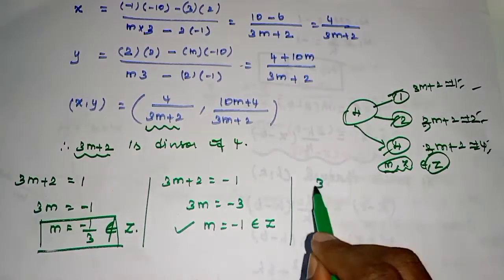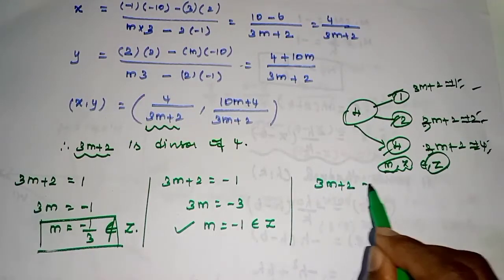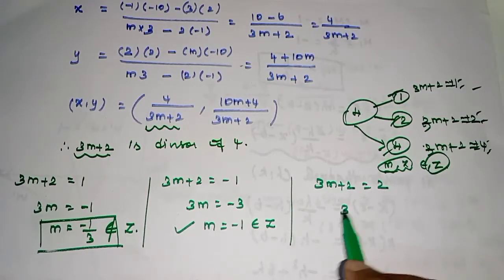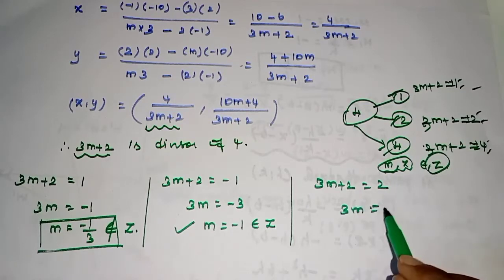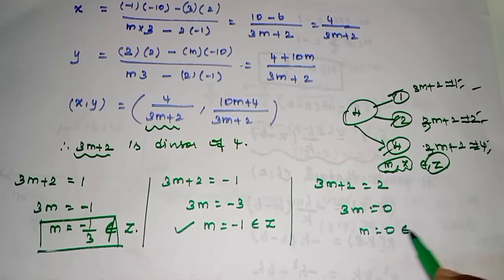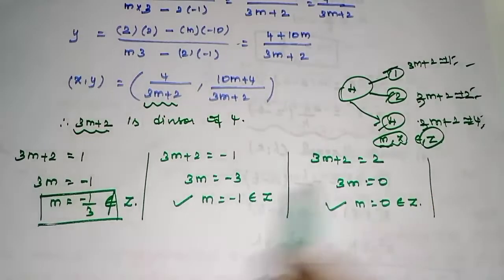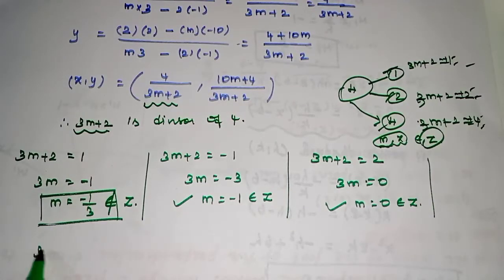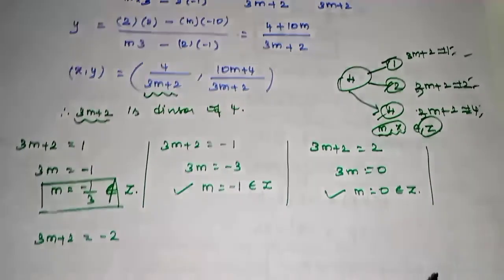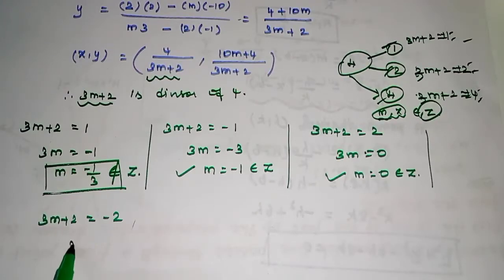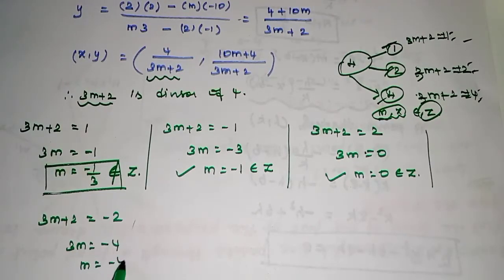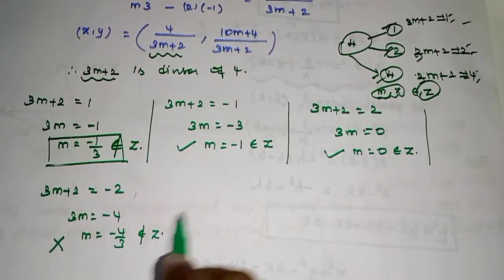Choose 3m + 2 = +2. So 3m = 0, giving m = 0. Since 0 is an integer, this is applicable. Next, choose 3m + 2 = −2. So 3m = −4, giving m = −4/3, which does not belong to the integers — not applicable. For 3m + 2 = +4: m = 2/3, not an integer — not applicable. For 3m + 2 = −4: m = −2, which is an integer — applicable.